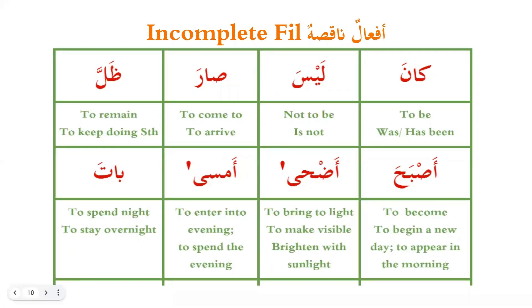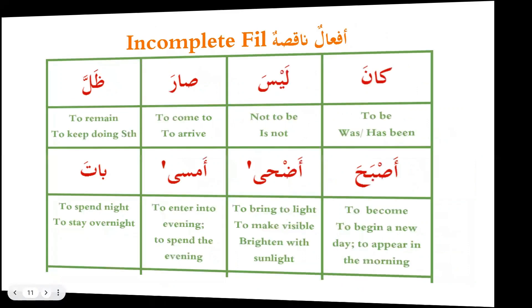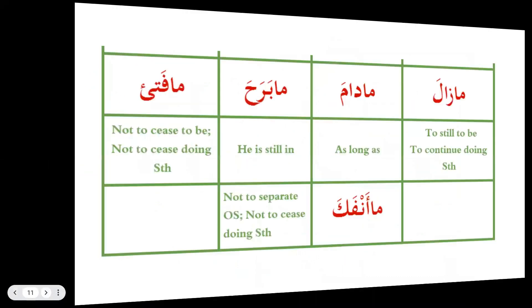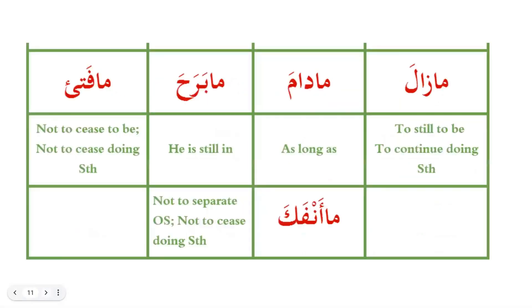And they are: kana, laisa, saara, dhalla, asbaha, adaha, amsa, bata, ma zala, ma dama, ma baraha, ma fatah, and ma anfaka.